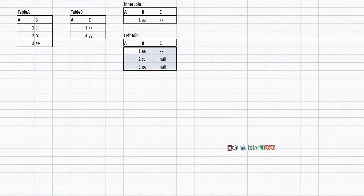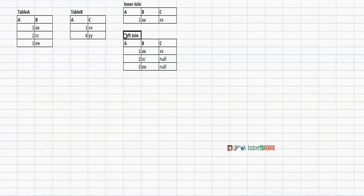This is the result set for left join: all records from the left side table, only matching records from the right side, and nulls for non-matching. Next is right join.